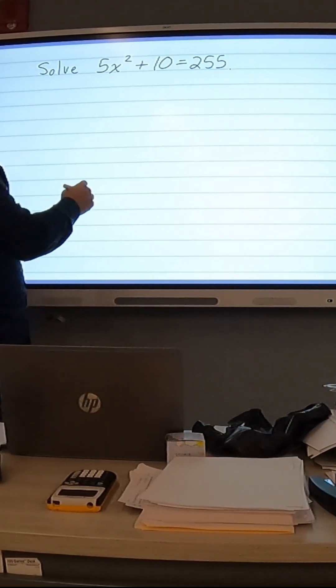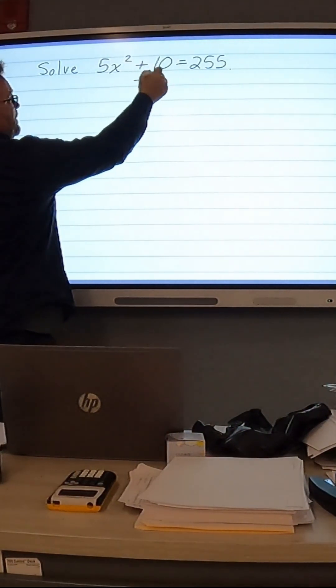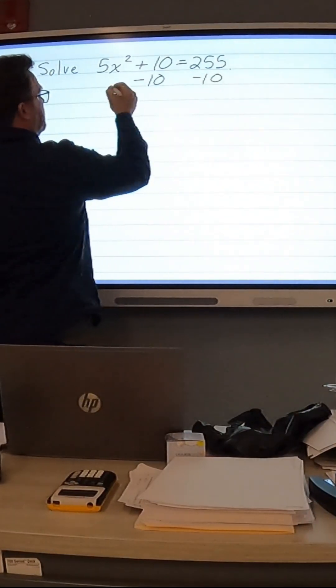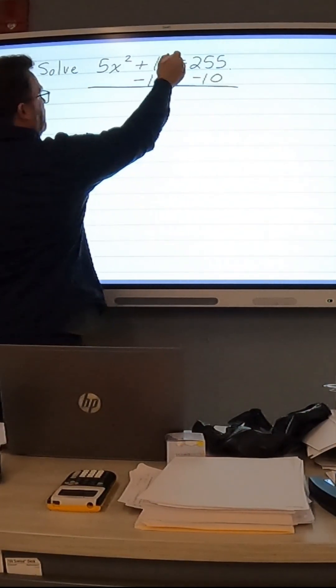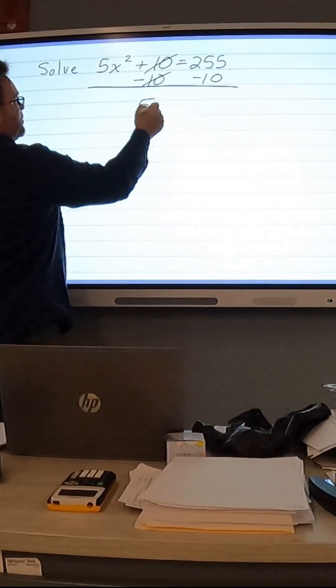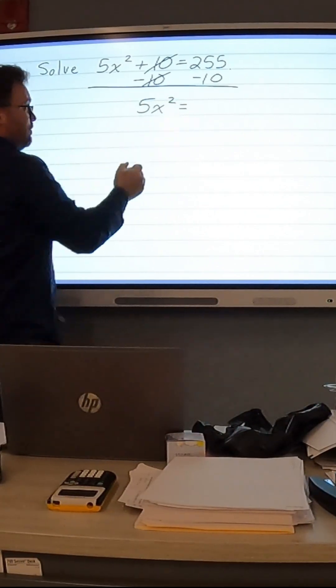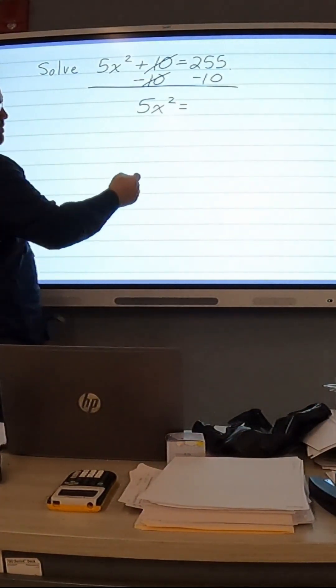First, we want to get rid of the addition of 10, so we're going to subtract 10 from both sides. And we're going to be left with 5x squared equals 255 minus 10, which is 245.